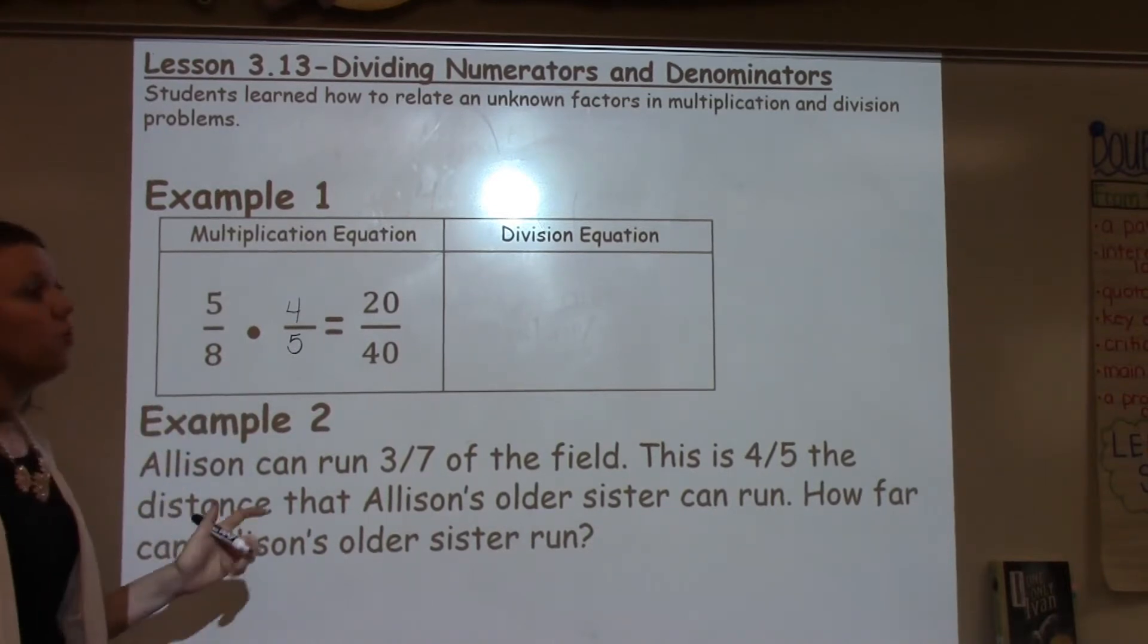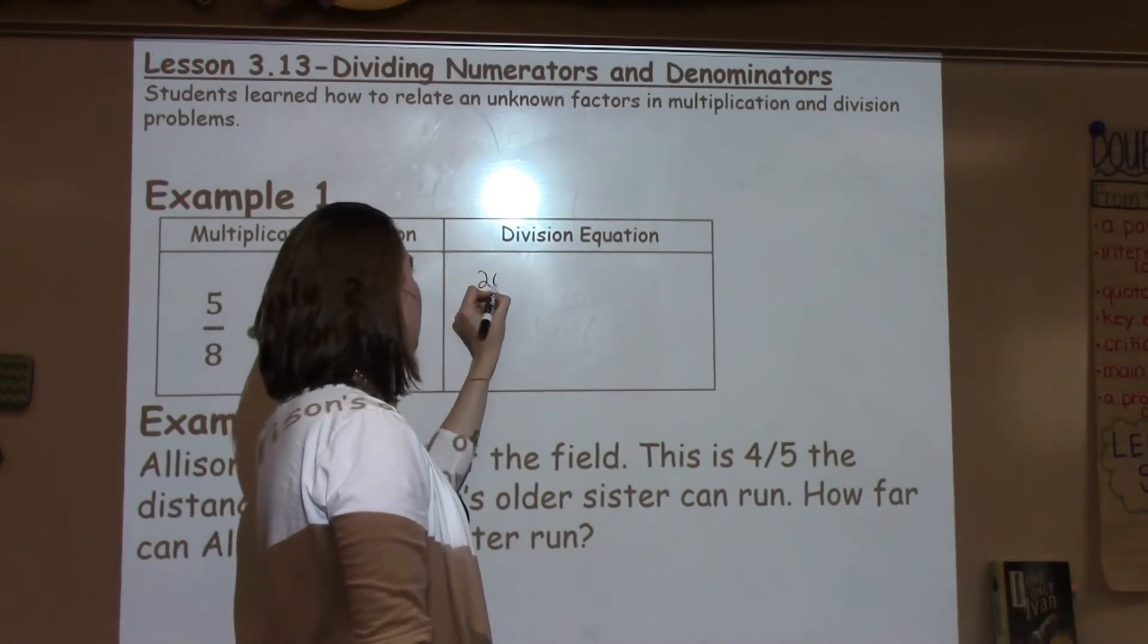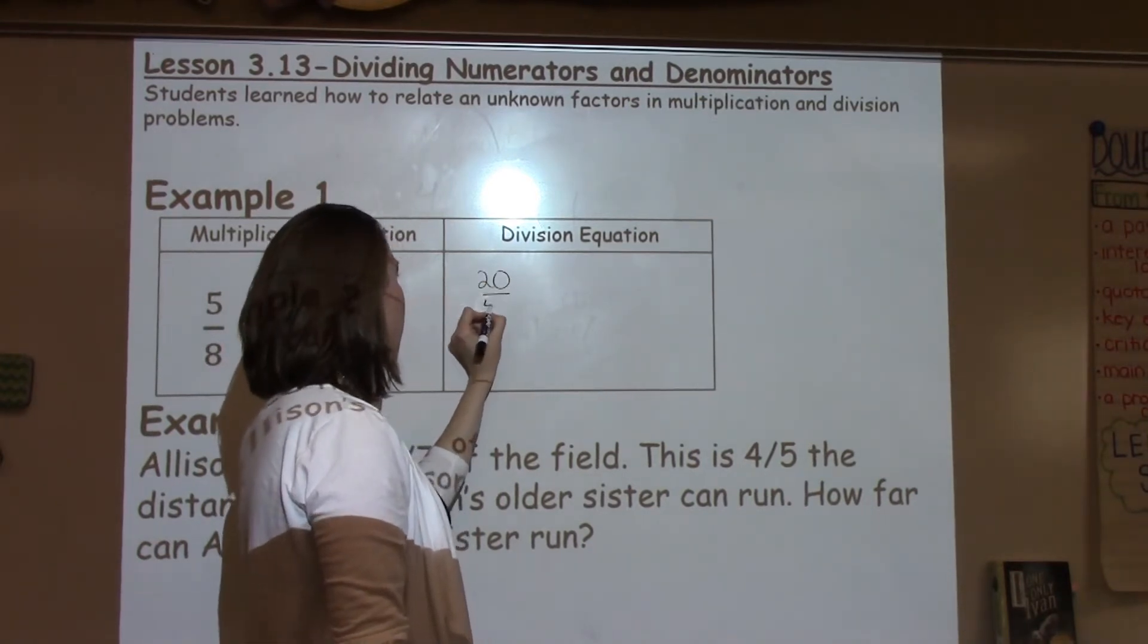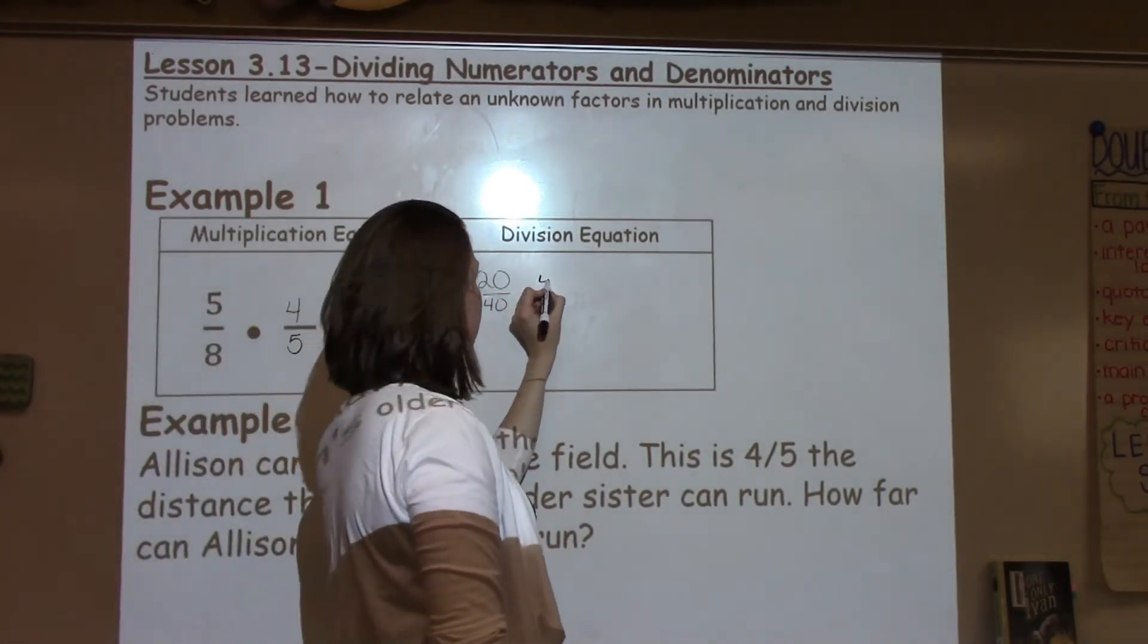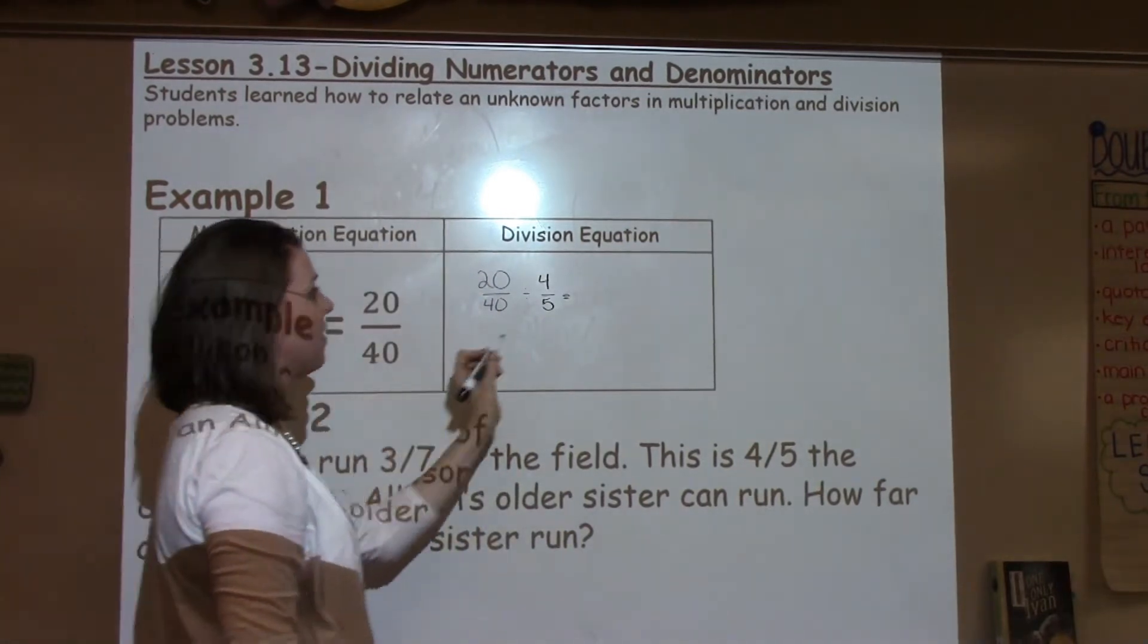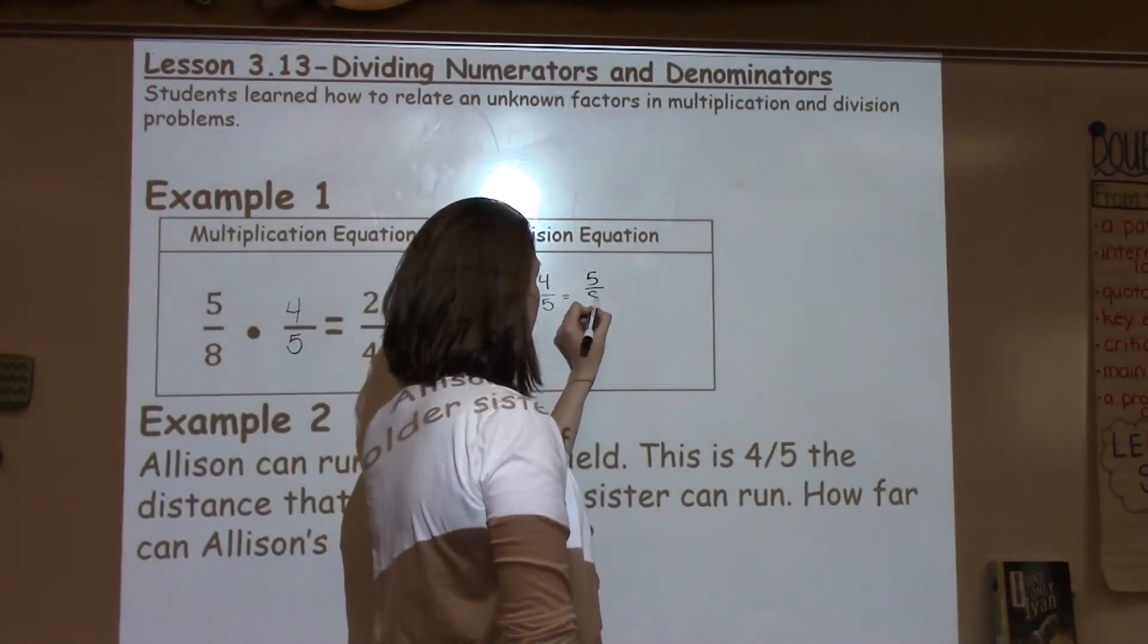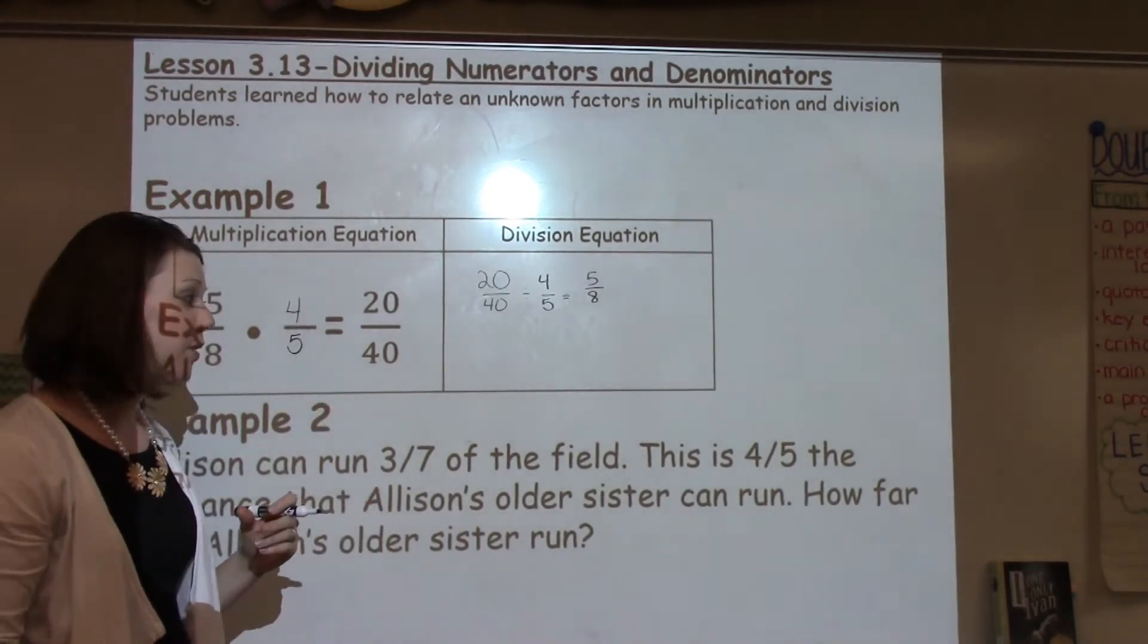When I write this as a division equation, what students have to do is kind of work backwards. We can take 20/40 divided by our 4/5, which gives us an answer of 5/8. So, students were just using the exact same numbers and making a reverse using division instead of multiplication.